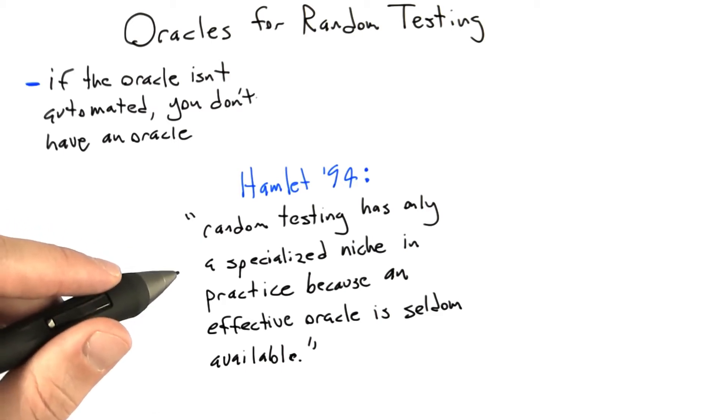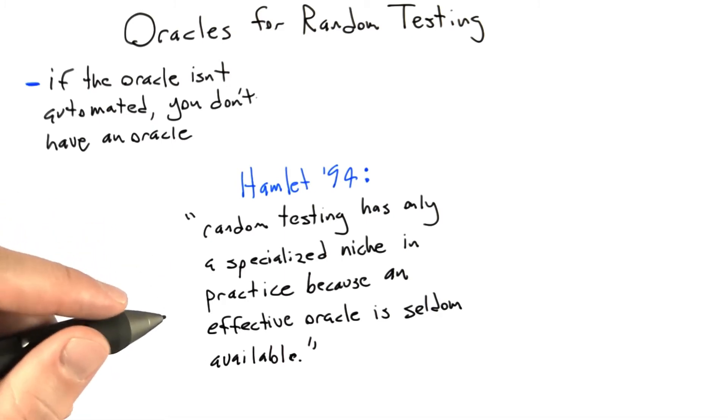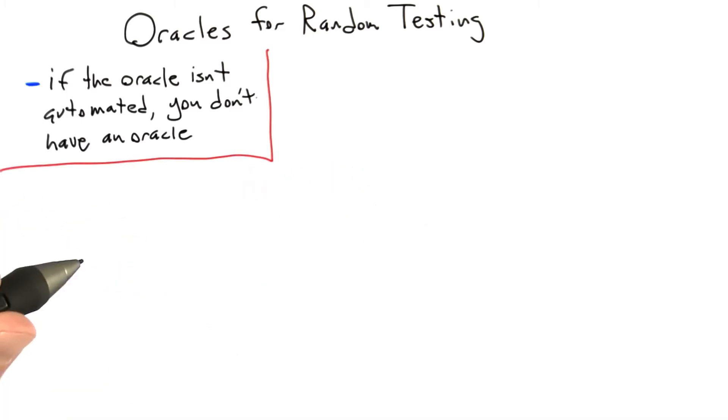And this is something that I don't actually agree with. What we're going to see is that sometimes you have to use some imagination, but really there are potentially quite a few oracles available, and almost always we can make something work, even if it's just a weak oracle, like watching out for crashes. So what I'm going to do is organize the oracles that are suitable for random testing into a collection of categories.